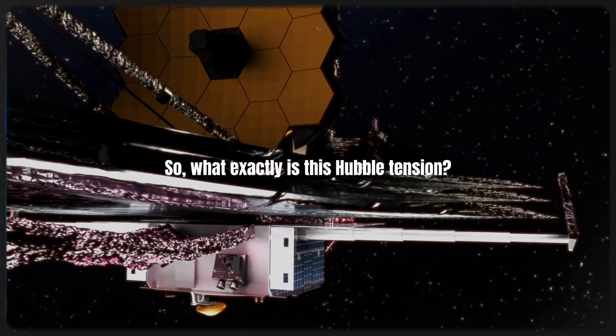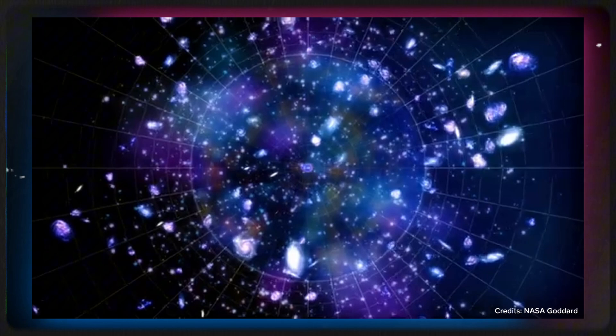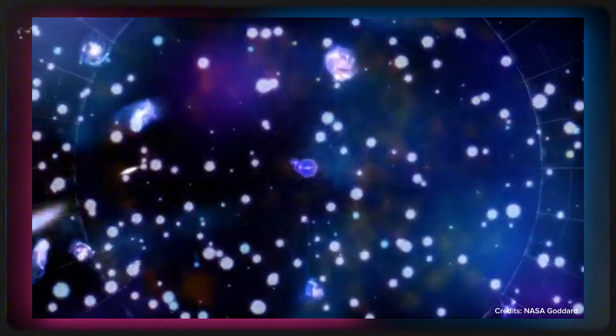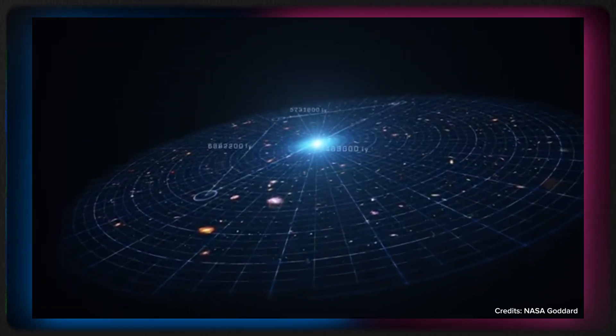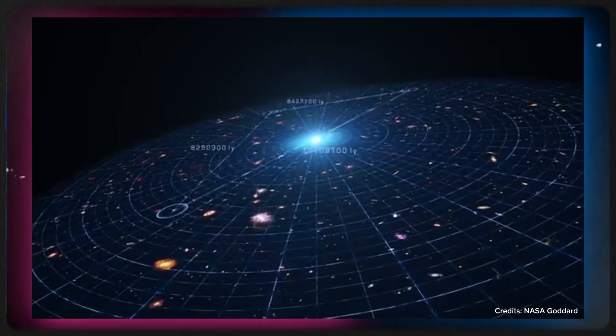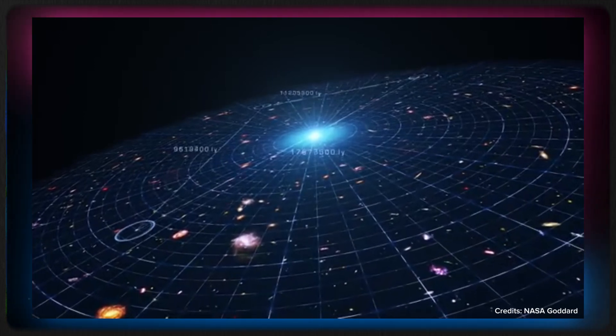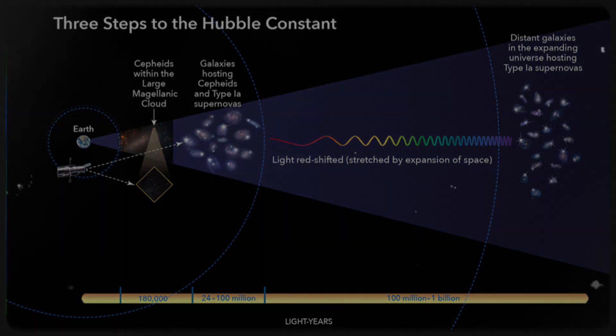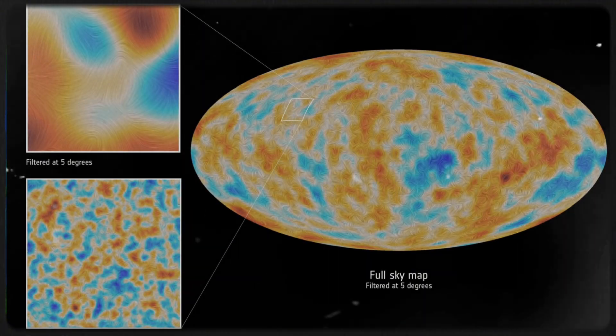So what exactly is this Hubble tension? Imagine two teams racing to measure the universe's growth. One team looks at nearby stars and exploding supernovae, like using signposts to gauge distances and speed. The other team studies ancient light from the cosmic microwave background, the faint glow left over from the Big Bang. Ideally, both teams should get the same number for the universe's expansion rate, called the Hubble constant. But guess what? They don't. The local measurements show the universe expanding faster than the predictions from the CMB. And that's the Hubble tension.